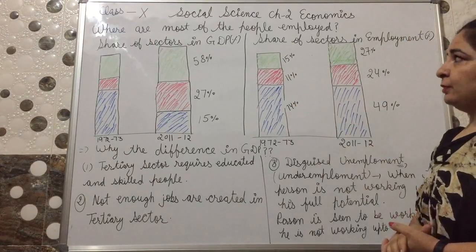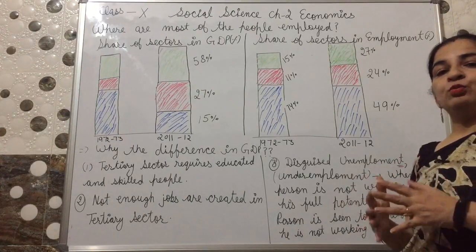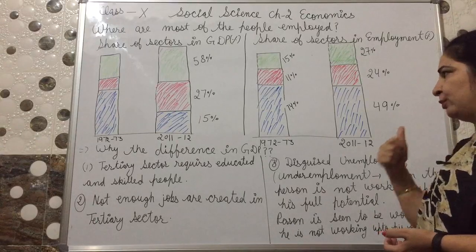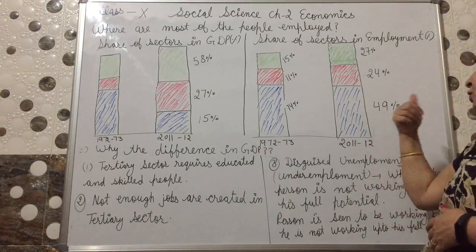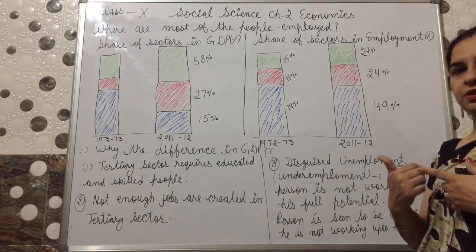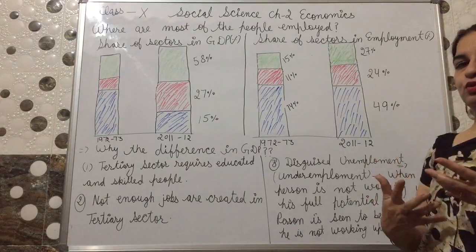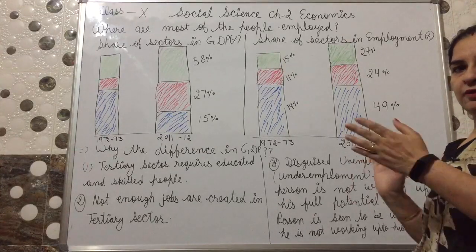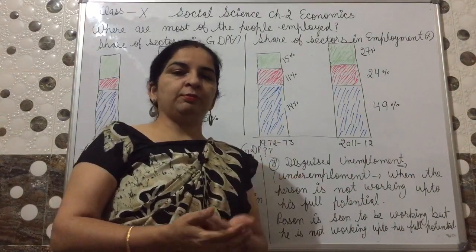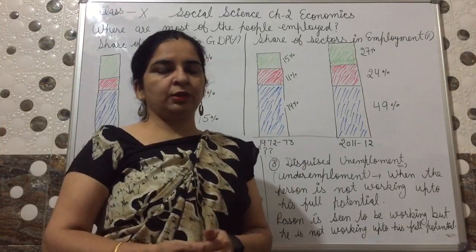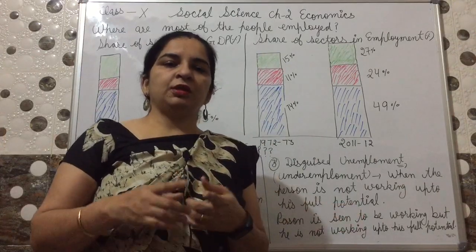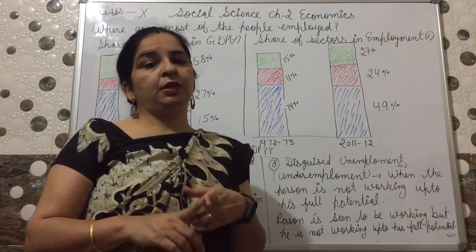Now compare these two graphs — share in GDP versus share in employment. In GDP, the tertiary sector contributes 58%, but if we talk about employment, the primary sector still provides more employment at 49%. So the difference is: we get more revenue from the tertiary sector, but the primary sector provides the most jobs to our population. The question is: why does this difference exist?